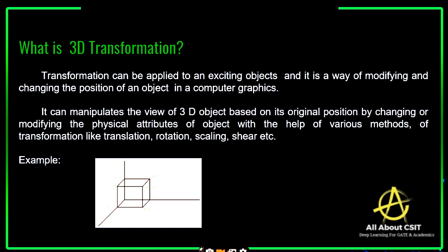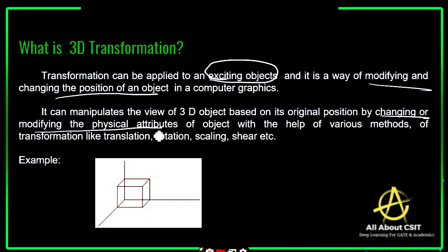So first, let's see what exactly 3D transformation is. Transformation is a technique of changing an object's size, shape, or position. One thing to remember: a 3D transformation can be applied only on an existing object. If the object is there, then only you can apply the transformation technique. It is a way of modifying and changing the position of an object in computer graphics. It can manipulate the view of a 3D object based on its original position.